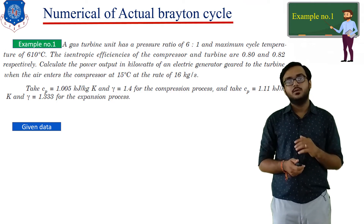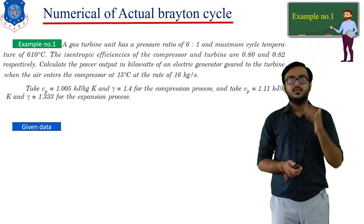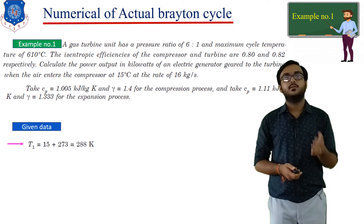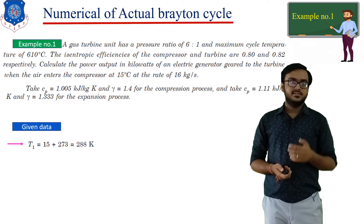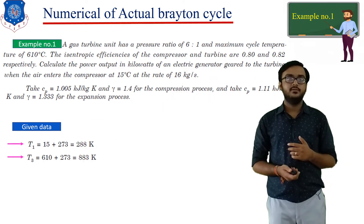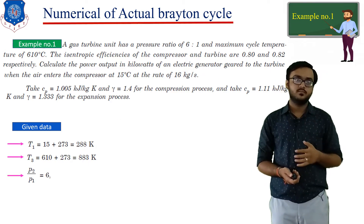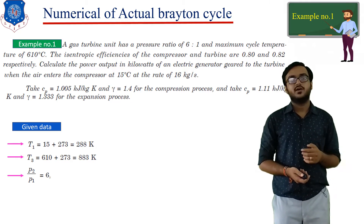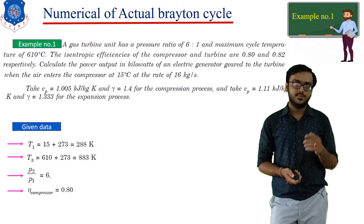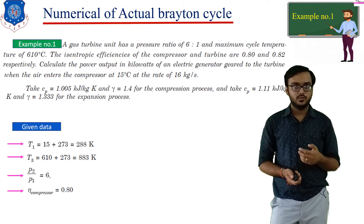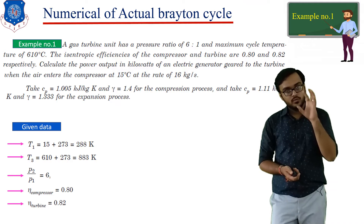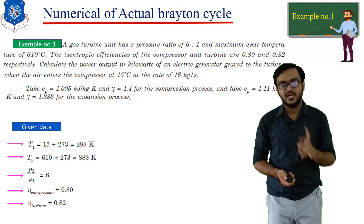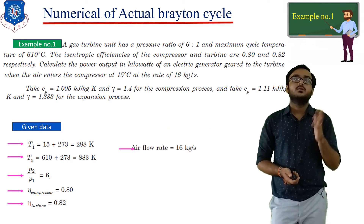Let's start this example by plotting the T-H diagram with the given data. T1 is 15°C, which is equivalent to 288 K. T3 is 610°C, which is equivalent to 883 K. The pressure ratio P2 by P1 is 6. Efficiency of the compressor is 80%, or 0.80. Efficiency of the turbine is 0.82, or 82%. With this given data, we can proceed for the solution by plotting the system diagram and the T-H diagram.